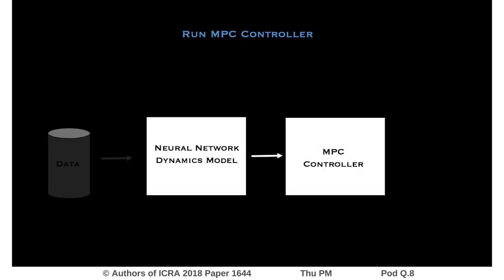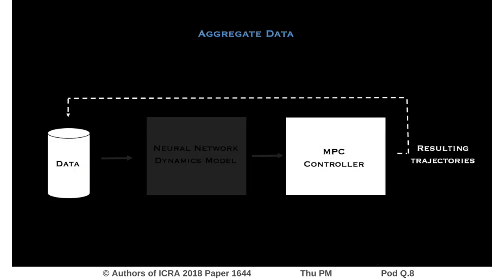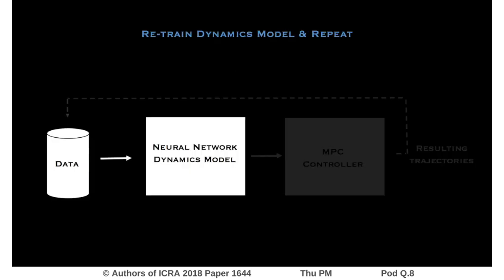We then use that dynamics model to run an MPC controller that executes a given task. Next, we take the trajectories that result from the execution of the controller and add them to the dataset. We retrain the dynamics model using both the old and the new data, and we repeat this entire iterative procedure until we achieve the desired performance.